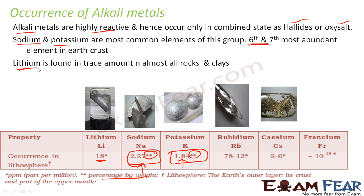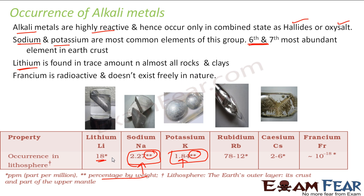Lithium is found in small traces in almost all rocks, but it is very less — measured in parts per million. Francium is a radioactive element; it doesn't exist freely in nature and is very, very rare.